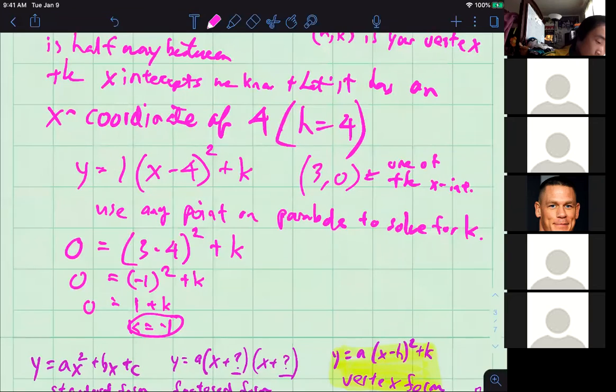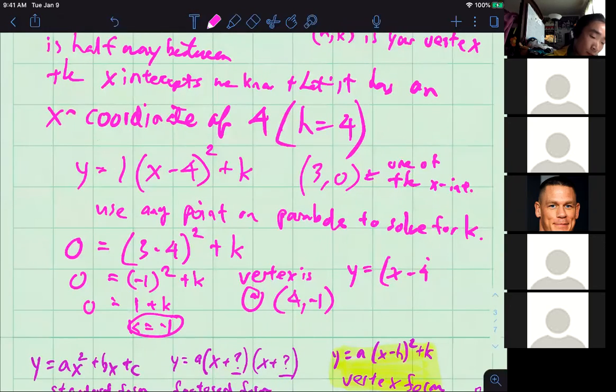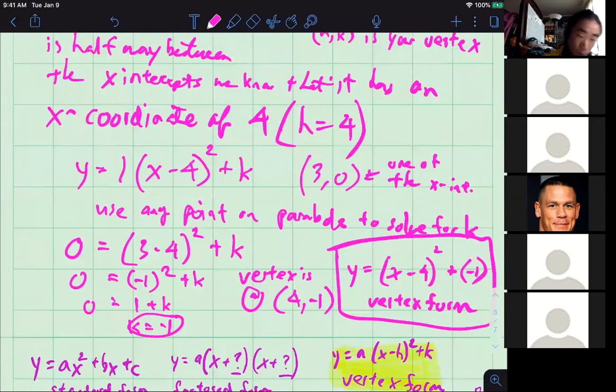From here, vertex is at 4 comma negative 1, just like Ezra said. And so the final vertex form looks like y equals (x minus 4) squared minus 1. This is vertex form. We'll definitely get more practice with this, but I wanted to show you and walk you through at least one example using it and connecting it to the other forms that we may be more familiar with.